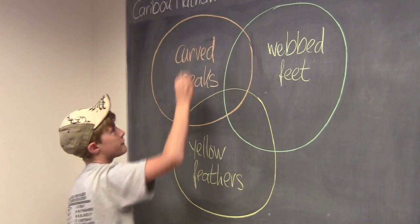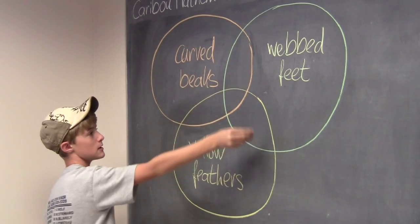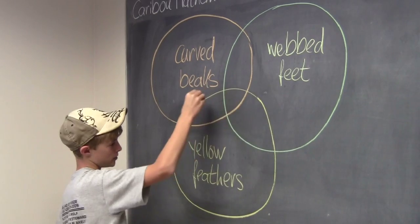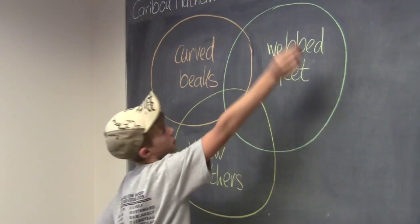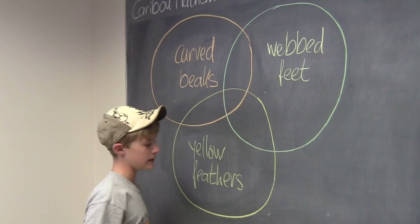This circle would be for birds with curved beaks, this circle would be for birds with yellow feathers, and this circle would be for birds with webbed feet.